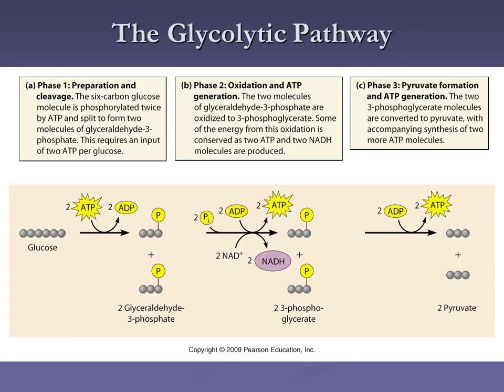Rather than looking at glycolysis as one box, we're going to break it into three boxes. Overall, there are 10 steps of glycolysis. We'll talk about: phase one — preparation and cleavage; phase two — oxidation and ATP production; and phase three — pyruvate formation and ATP production.